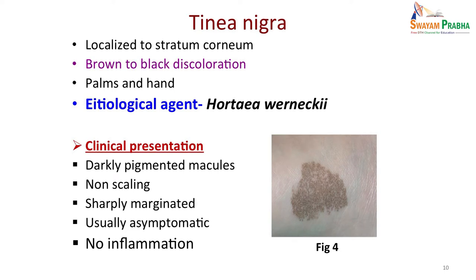Another kind of superficial skin infection is tinea nigra. This is again a localized stratum corneum infection, but here you get brown to black discoloration patches usually seen on the palms and hands, not on the back. The etiological agent is Cladosporium verneckii, a deeply pigmented fungus. Clinically the patient presents with dark pigmented macules that are non-scaling, sharply marginated, and asymptomatic — no inflammation and no itching.